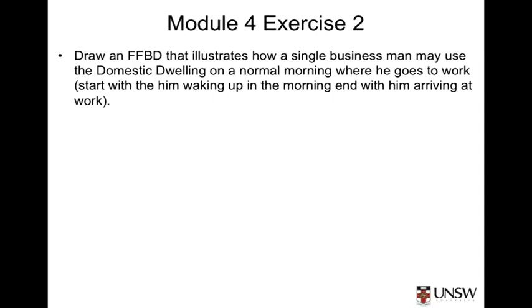Hopefully you now have a better feel about how to identify stakeholders in a project. In the second exercise, we asked you to examine the use of a simple requirements engineering tool, the functional flow block diagram, or FFPD. We asked you to draw the FFPD illustrating how a single businessman may utilise the domestic dwelling on a normal morning when he gets up and goes to work — starting from when he wakes and ending when he arrives at work. The purpose is to explore the way in which the system will work under a particular example, effectively drawing a use case as part of the operational concept.